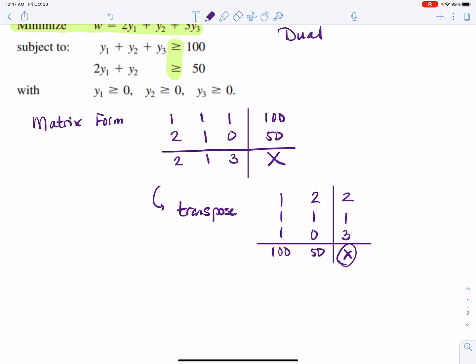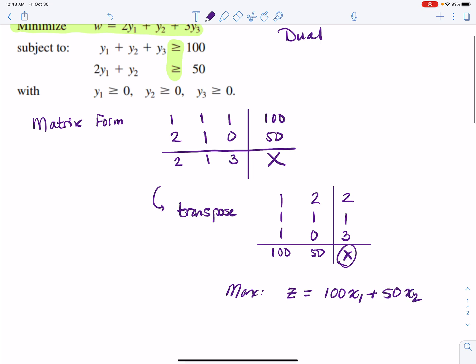So we're going to reconstitute this one as a maximization problem. So what are we maximizing? Well, the bottom row corresponded to the objective function before. Same thing here. Except I'm going to call it Z this time. So remember, Z is the letter that's kind of reserved for max problems. W we use for min problems. And this is going to be equal to 100X1 plus 50X2.